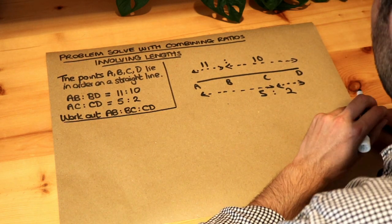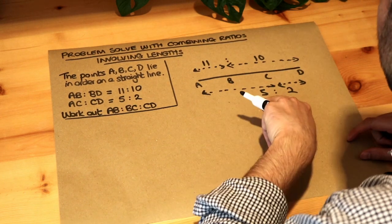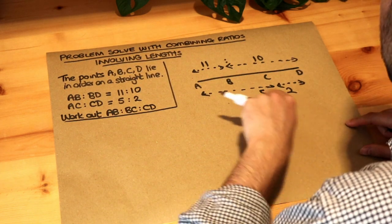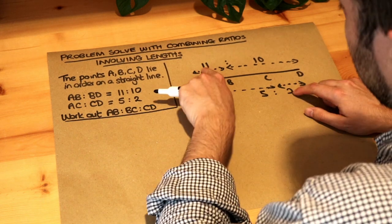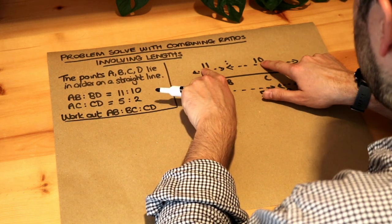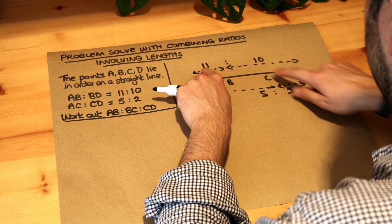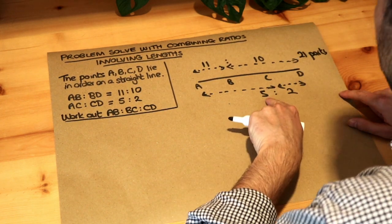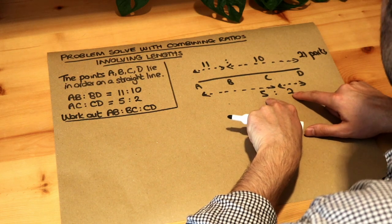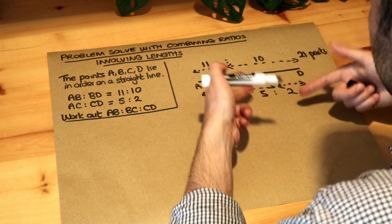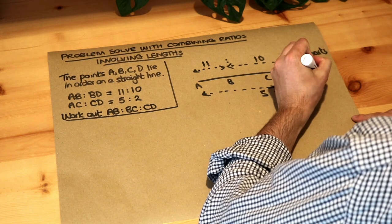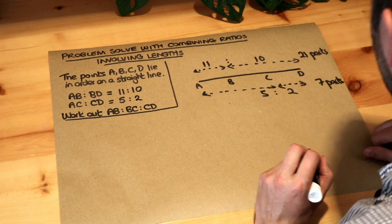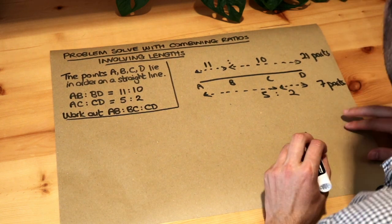Now the trick with this is to turn these ratios into actual lengths, say in centimeters. At the moment these ratios are not consistent because if this was 11 centimeters and 10 centimeters, that would be 21 centimeters, or 21 parts. And if that was 5 centimeters and 2 centimeters, that would be 7 centimeters. That's not the same as 21, but we can say that's 7 parts in this ratio. To make these exactly consistent, we need to have the same number of parts.